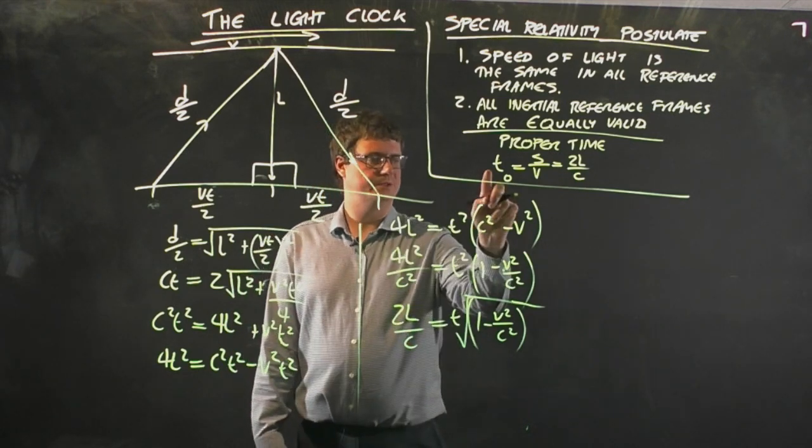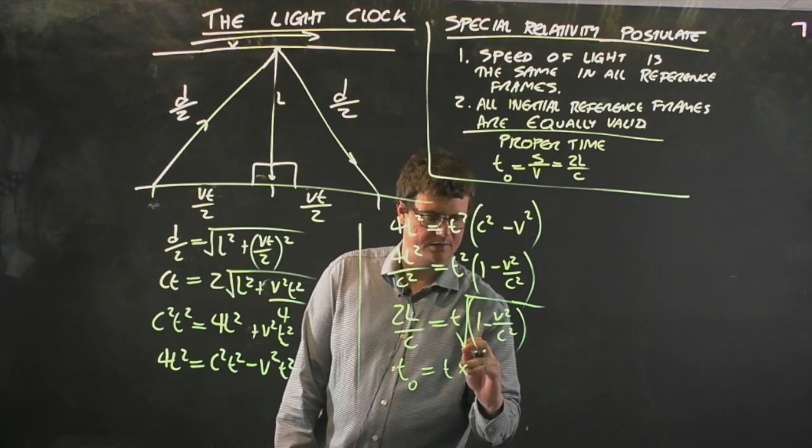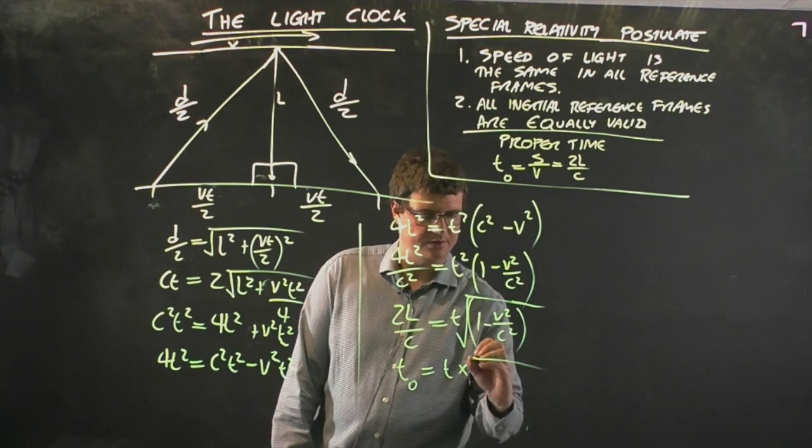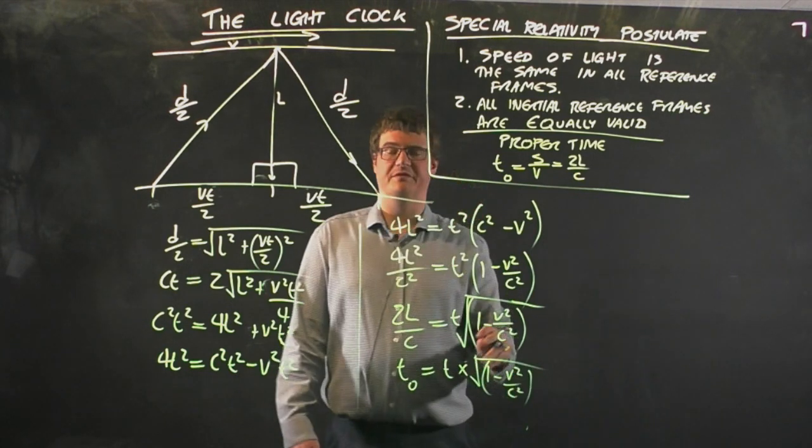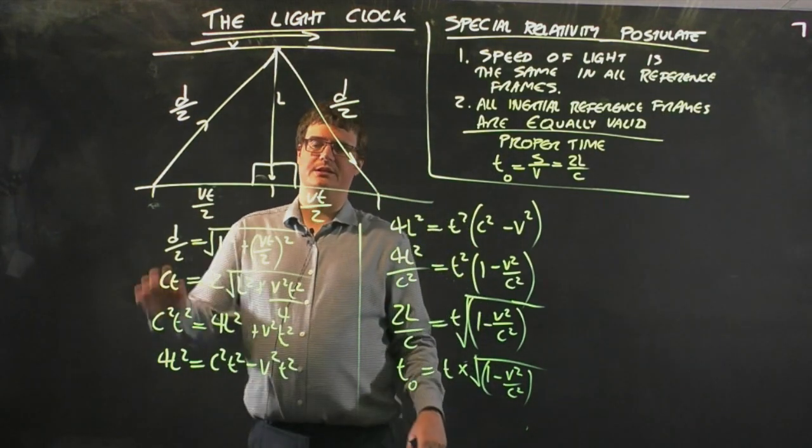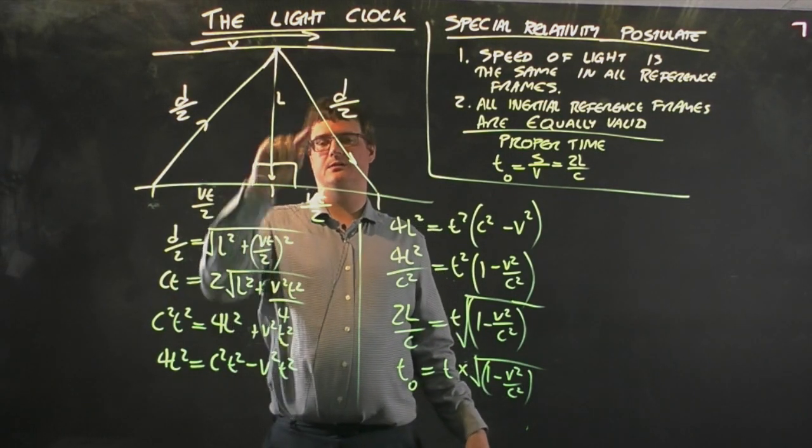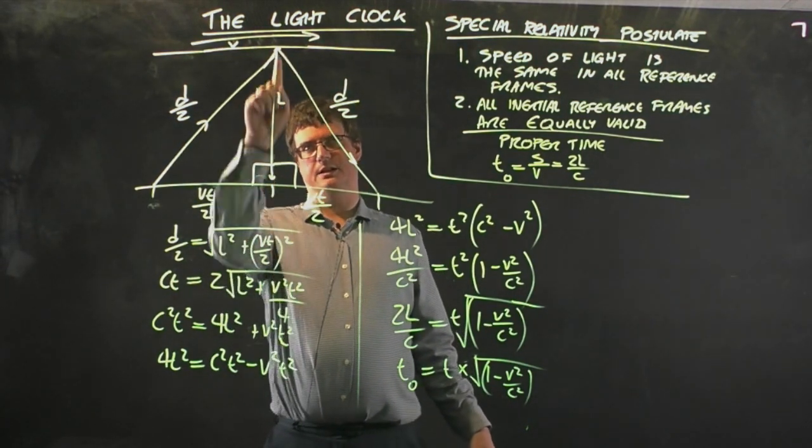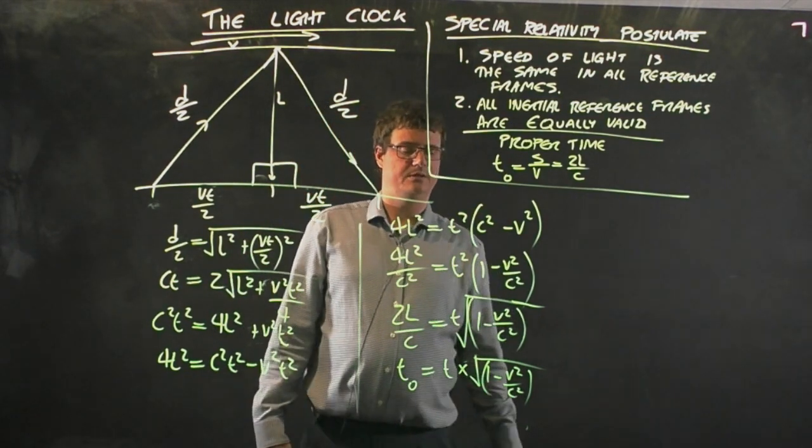Now I can take the square root of everything and get 2L on C is equal to T times 1 take V squared on C squared. The proper time is equal to this thing, this time in the moving reference frame, times by 1 take V squared on C squared. V is the speed I'm moving at relative to the light clock. C is the speed of light. T0 is the time measured by an observer who's stationary relative to the light clock, so the events happen in the same place. That's the proper time.